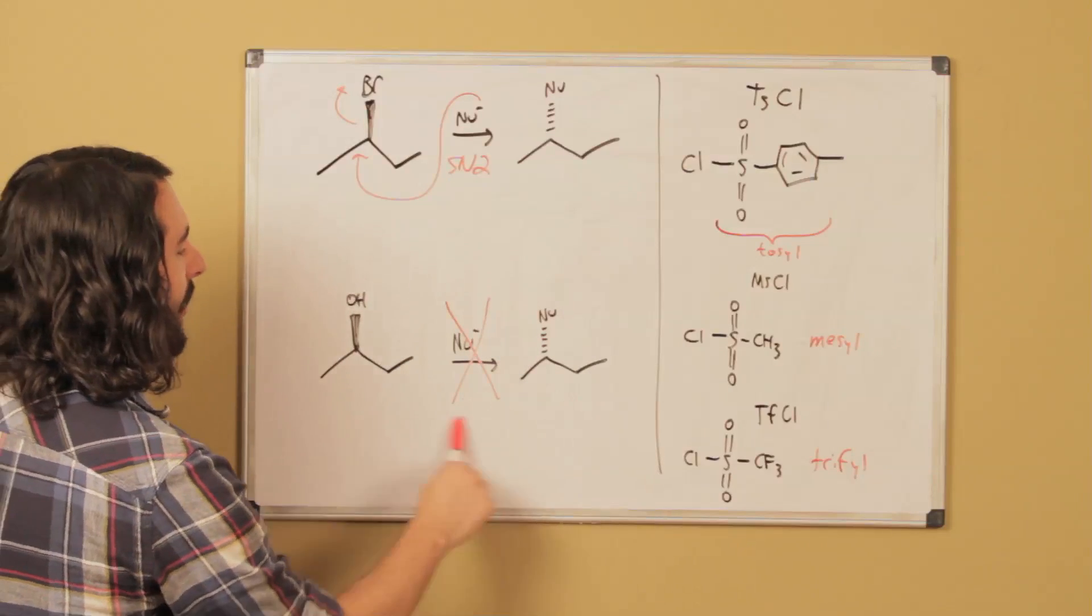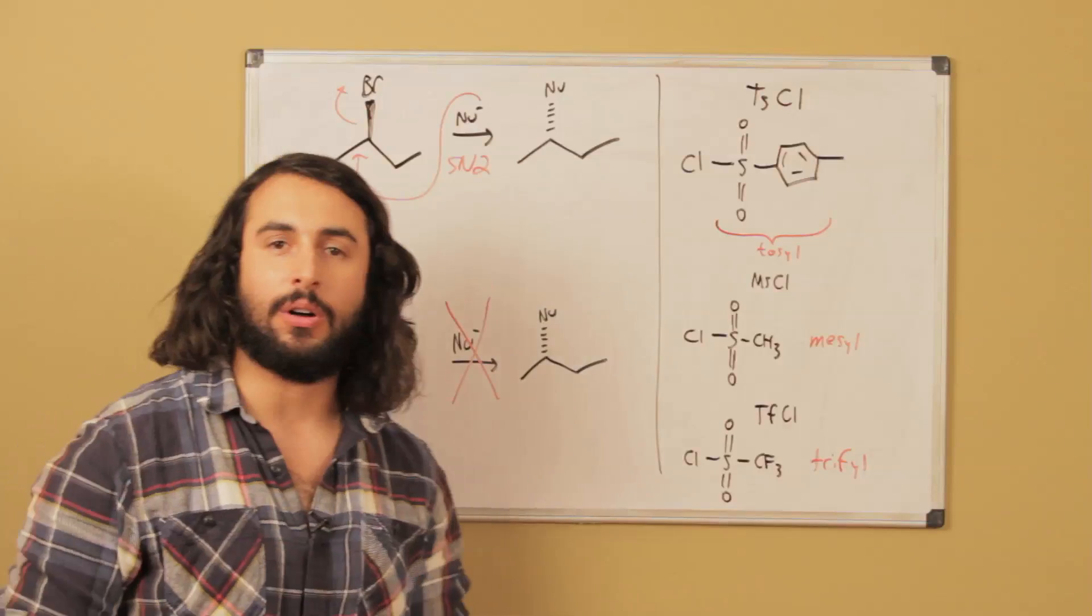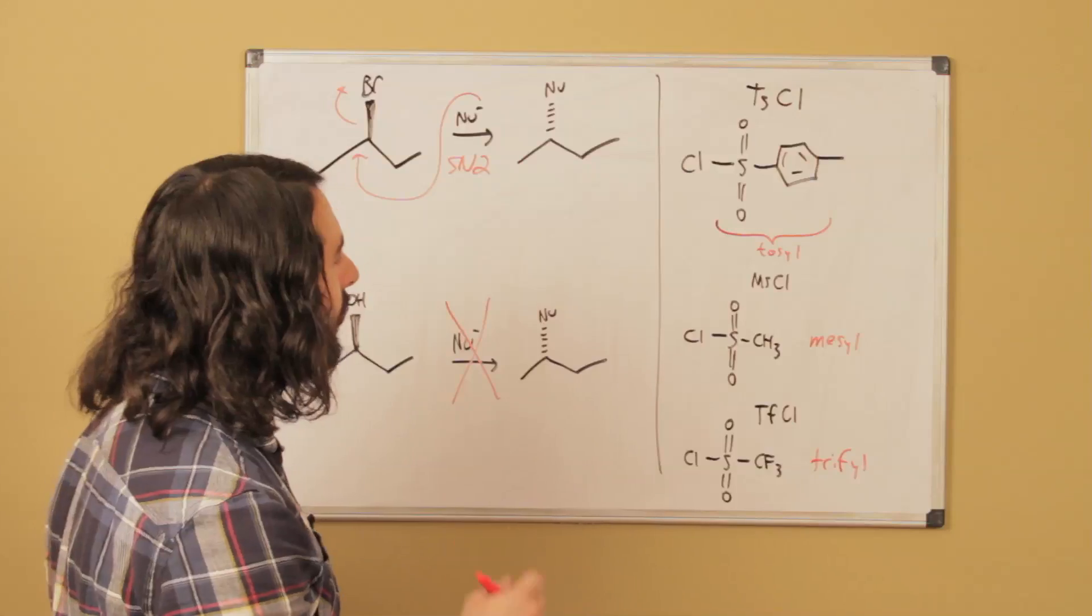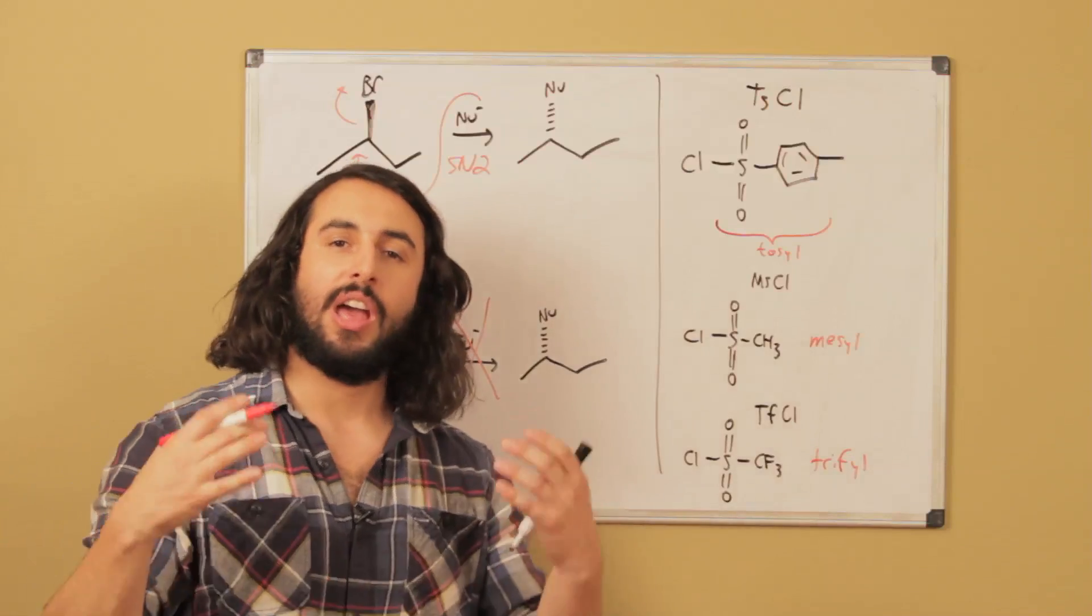So what if there was something that we could do to this alcohol to make it receptive to an SN2 reaction? Well, actually there is, and we could turn it into something called a leaving group derivative by reacting it with one of these compounds.